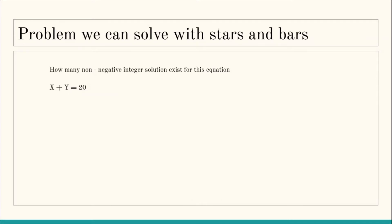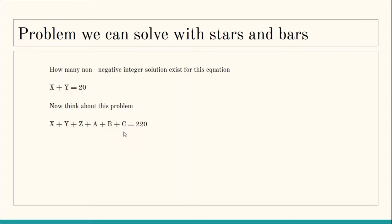Since 20 is an integer and x is an integer, 20 minus x is also an integer. Since y must also be non-negative, 20 minus x must be ≥ 0, so x can take all values from 0 to 20, giving 21 total solutions. But if the equation has six variables summing to 220, how many solutions exist? Problems where the number of variables is unknown or changes per test case become very difficult to solve using brute force or ad hoc techniques.